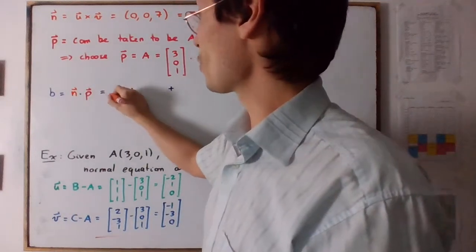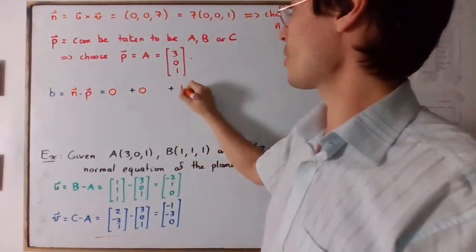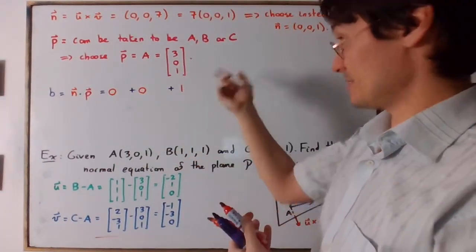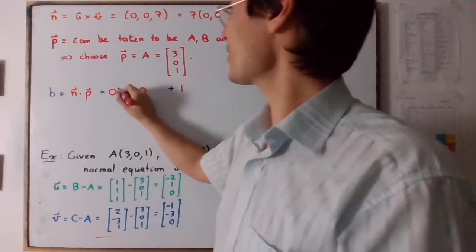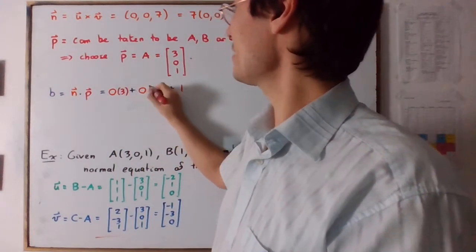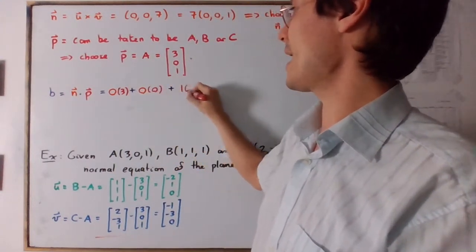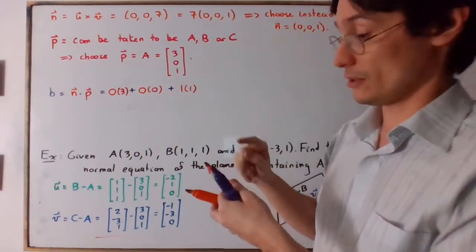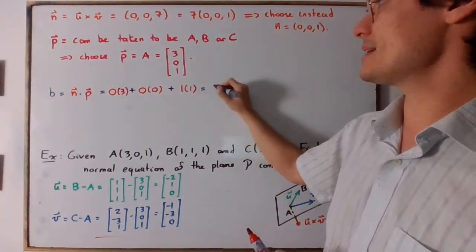We have three components, but as I can see, it's going to be very simple, because the normal vector is simply 0, 0, 1. And the position vector is simply 3, 0, and 1. So as a result, we're getting that B is equal to 1.